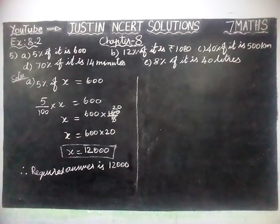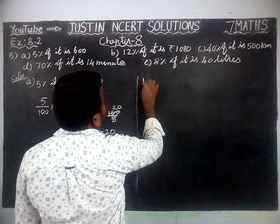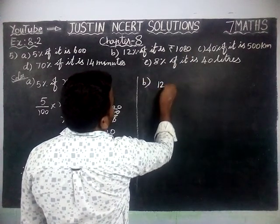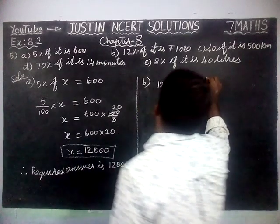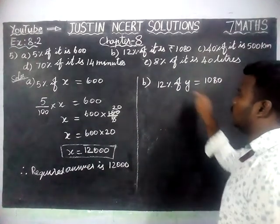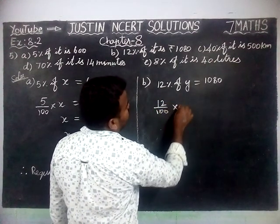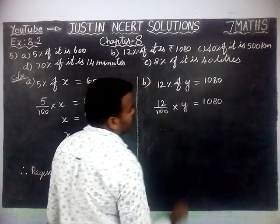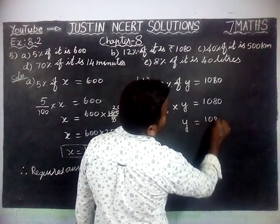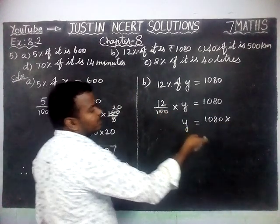Next, we are going to solve the second question: 12% of it is 1080. We are going to take 12% of Y equal to rupees 1080. So, 12 divided by 100 into Y is equal to 1080. Y is equal to 1080 into the reciprocal of 12 by 100, which is 100 divided by 12.